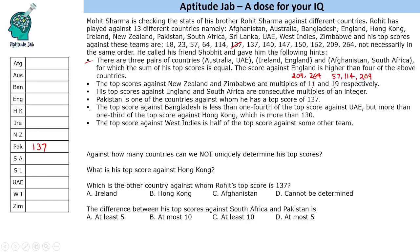We have multiple possible cases, but let us fill in the information to figure out which apply. The last statement says the top score against West Indies is half of the top score against some other team. Checking the numbers: 57 is half of 114. So West Indies is 57, and we can remove 57 from further consideration. The remaining candidates are either 114 or 209.